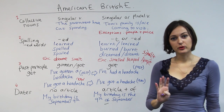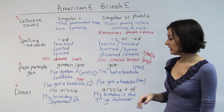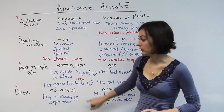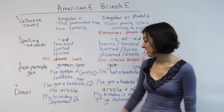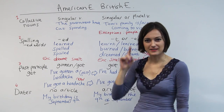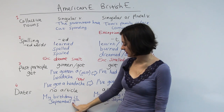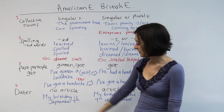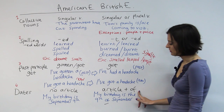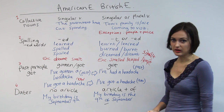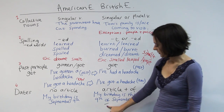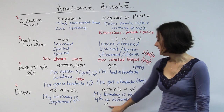Point number four is talking about dates. We have different conventions. In American English, they don't use an article — you'd say 'My birthday is September 9th.' In British English, we need to use 'the.' We say 'My birthday is the 9th of September,' also using a preposition. So those are the first four differences; we've got four more differences to look at.